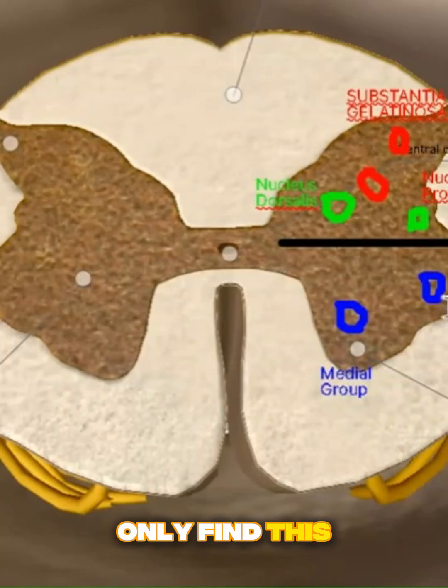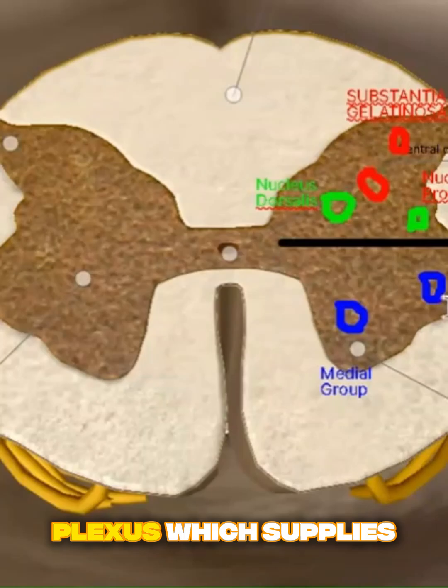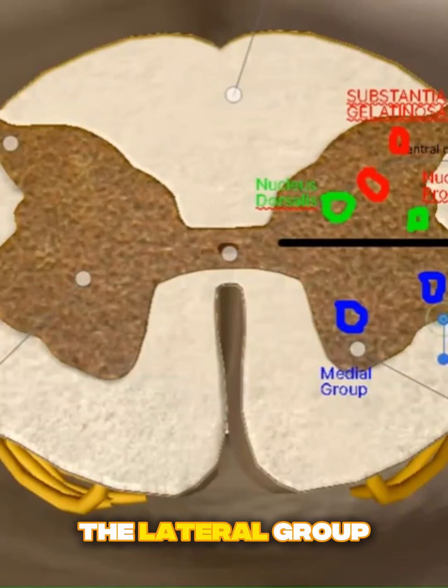The lateral group will supply the limbs. So it makes sense that you only find this nucleus near the brachial plexus, which supplies the upper limb, and the lumbar plexus, which supplies the lower limb, the lateral group. You won't find these in other parts.